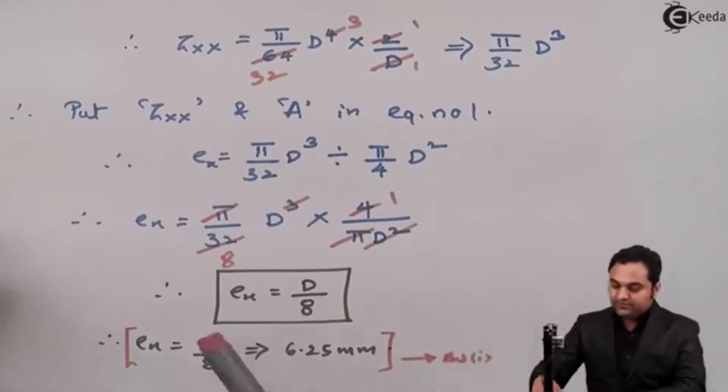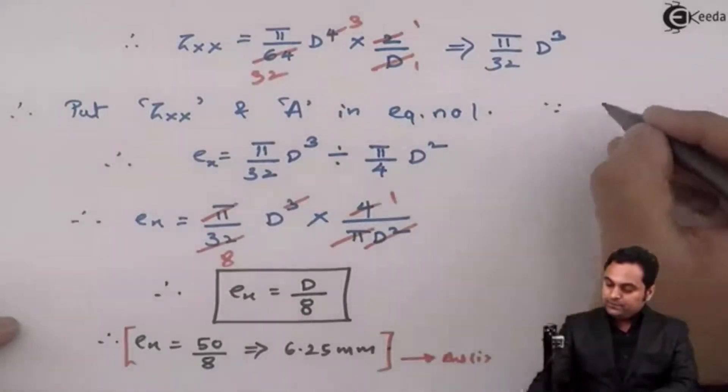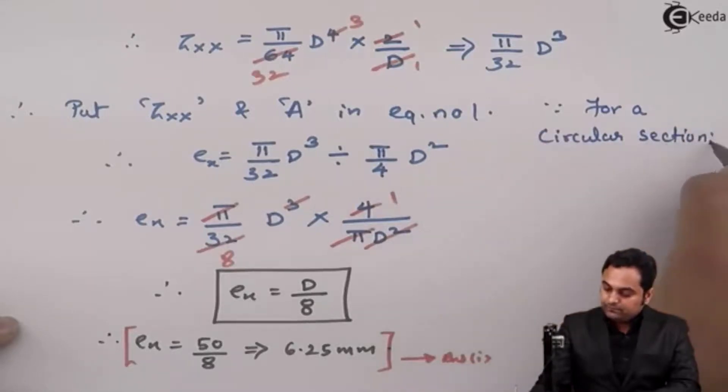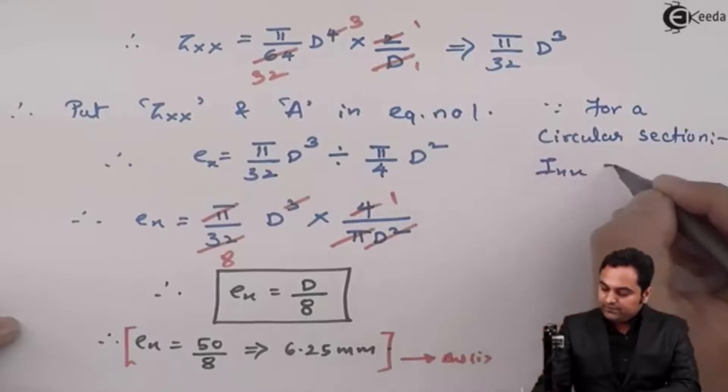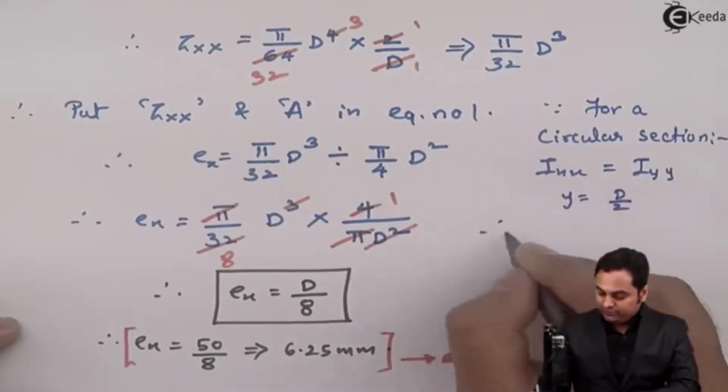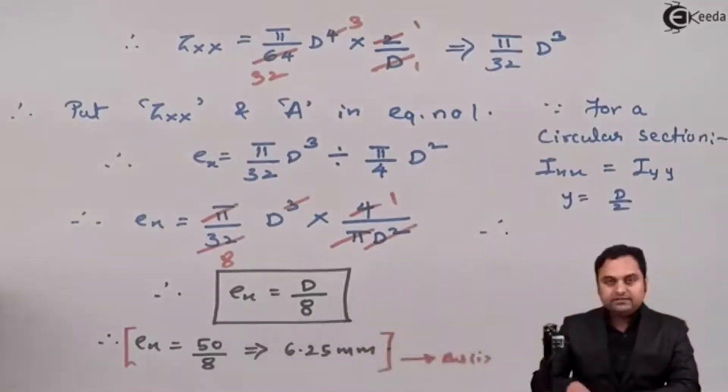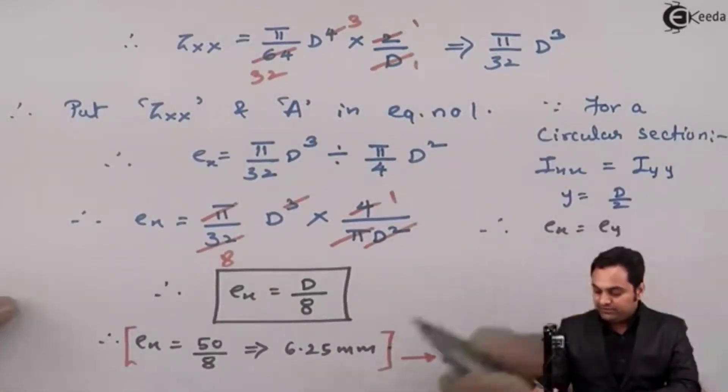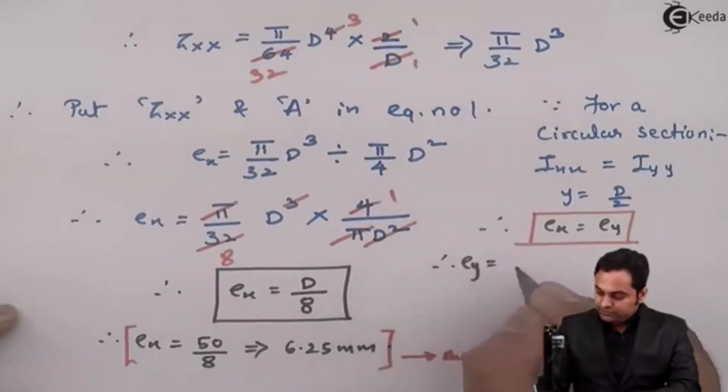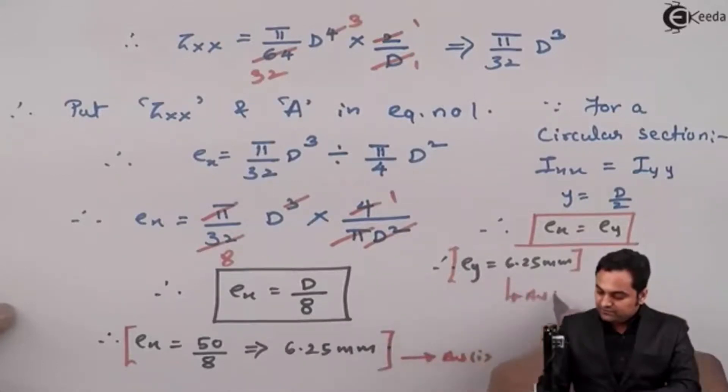Now this limit of eccentricity EX is the first answer for us. Since for a circular section IXX is equal to IYY and even the Y value is same, so therefore what is the value of EX that will be same for EY. So EX is equal to EY. Therefore EY is also 6.25 mm.